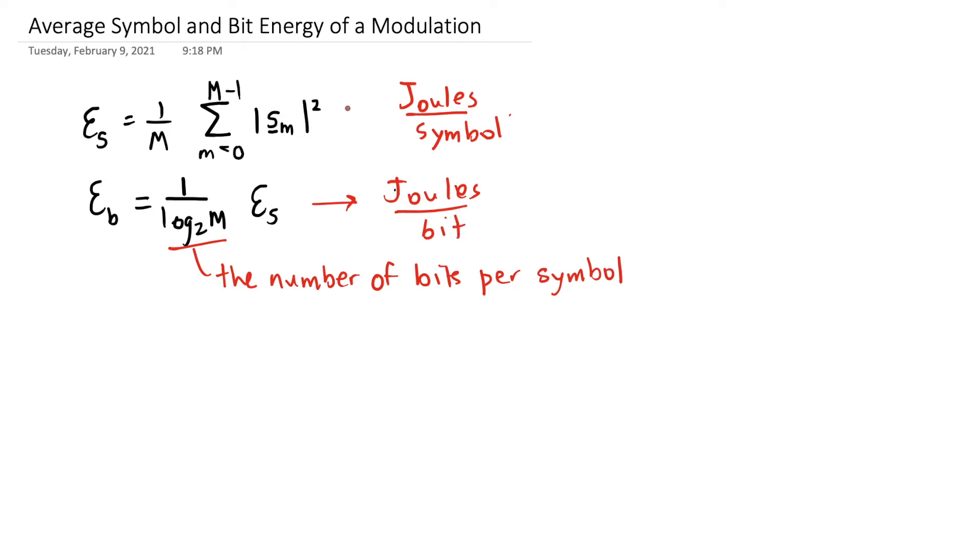Remember that this s sub m has voltage values, so when I square them I get power values, and because then I'm transmitting them over time and they have unit energy that corresponds then to energy. That's why I get joules in both sides rather than watts or volts.